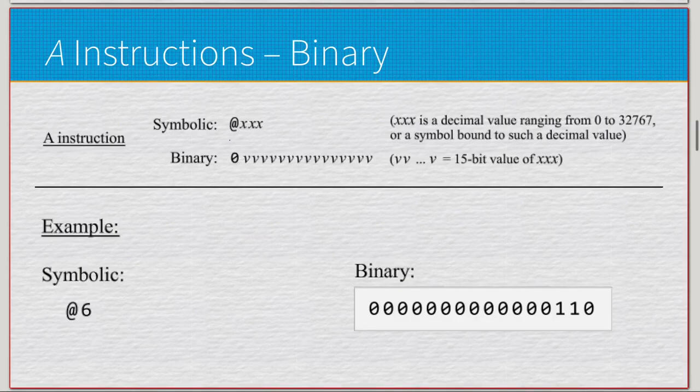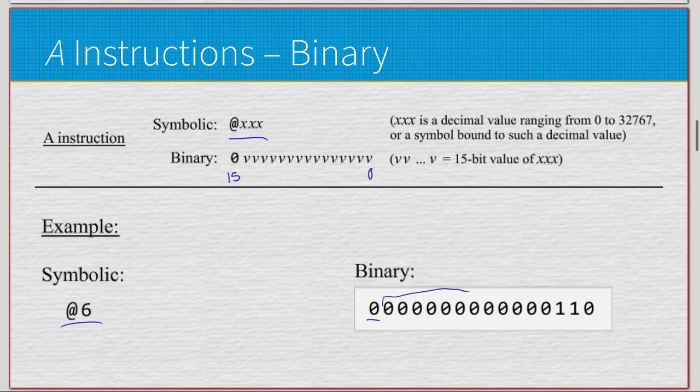Symbolic-wise, it's at some decimal value. It doesn't really matter. But the binary of this is the most significant bit is zero. So, again, I've said this before, I know, but this is the 15th bit. This is the 0th bit. So, least significant is the rightmost, most significant is the leftmost. We have this example here, we have @6, so the most significant bit gets set to 0, and the remaining 15 bits over here get set to 6 in binary.